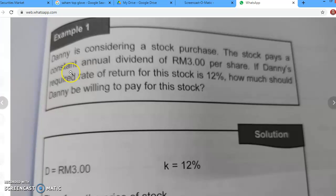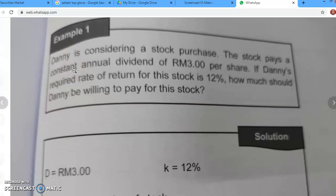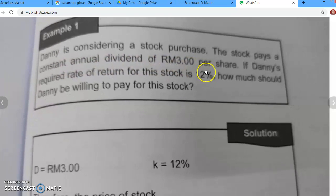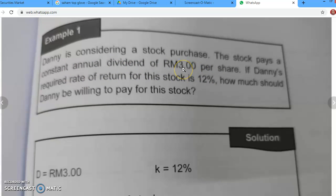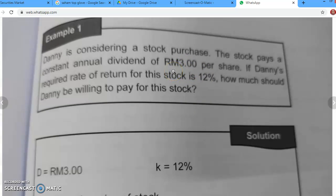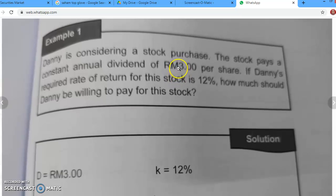Jadi apabila kita baca soalan ni, dia tidak menyatakan bahawa dividend yang dibayar sebanyak RM 3 ni adalah dividend yang growing. Tidak sebut pun if the dividend being grow dan sebagainya. So it means that this is the zero growth model.